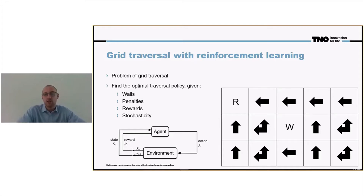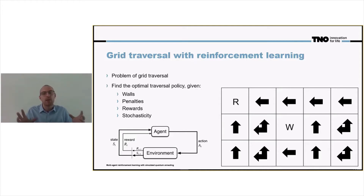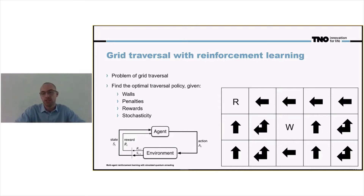Note that even if you start in the penalty state, that does not mean that you cannot reach the reward. The penalty state is just there to indicate it is a bad place to be, so the policy should learn to avoid the penalty state, as we can also see in the optimal learned policy.